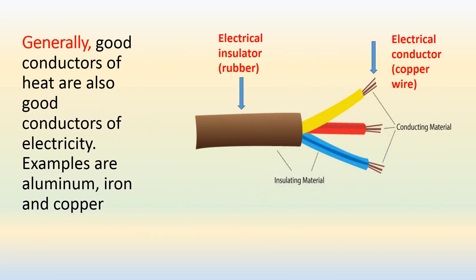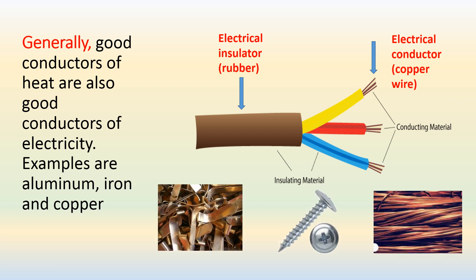Generally, good conductors of heat are also good conductors of electricity. Examples are aluminum, iron, and copper.